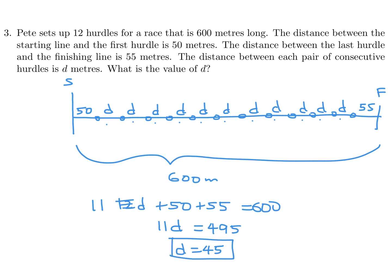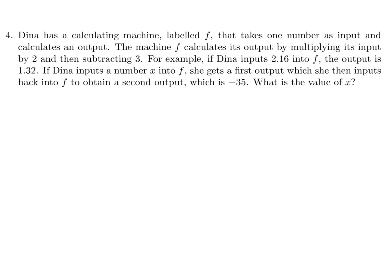Dina has a calculating machine labeled f that takes one number as an input and calculates an output. The machine f calculates its output by multiplying its input by two and then subtracting three. For example, if Dina inputs 2.16 into f the output is 1.32. If Dina inputs a number x into f she gets a first output, which she then inputs back into f to obtain a second output of minus 35. What is the value of x? So f(x) is 2x minus 3, and they're asking for f(f(x)) equals minus 35.